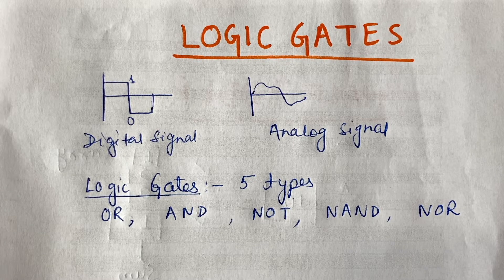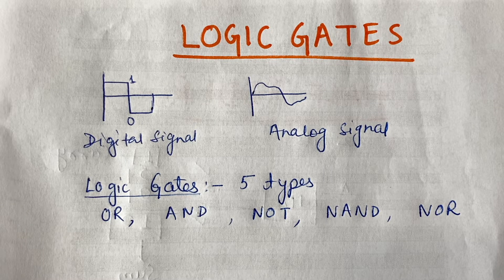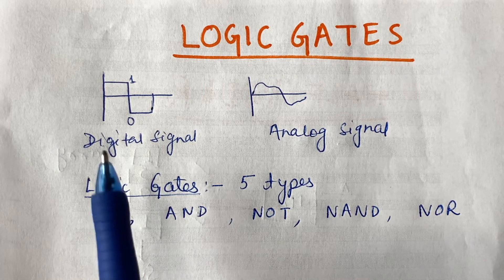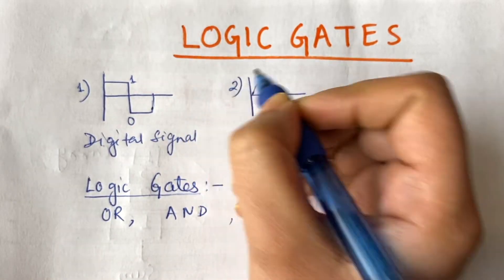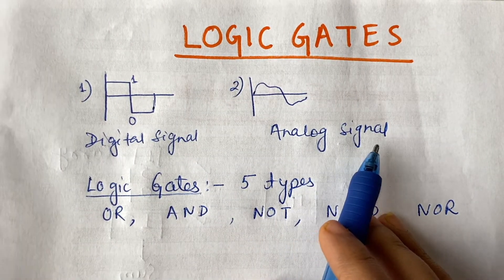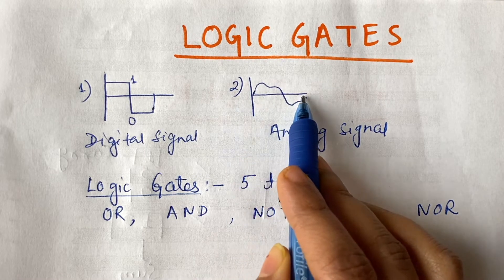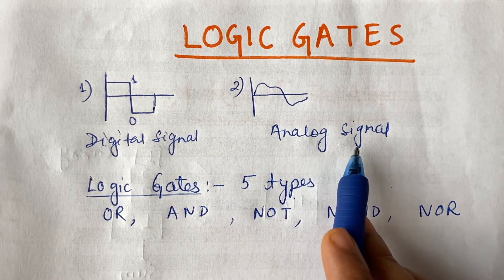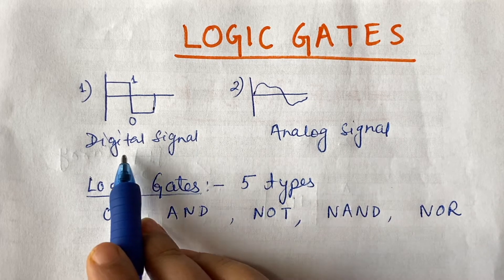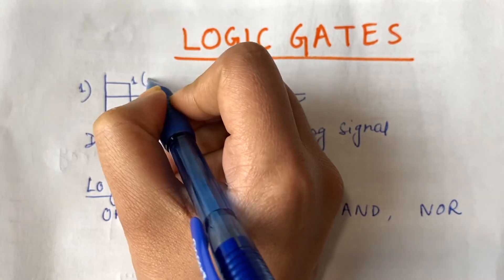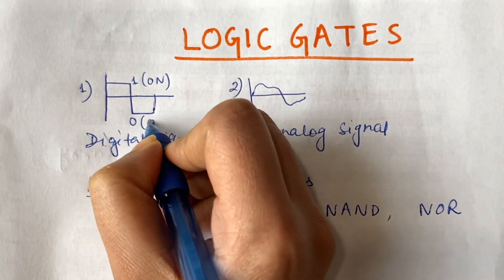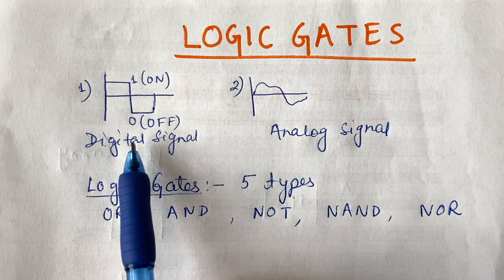Hey everyone, welcome to the channel. In this video we are going to learn about logic gates. But before that we have to know about signals. The digital signal goes on and off — one is on and zero is off. The analog signal is always continuous.